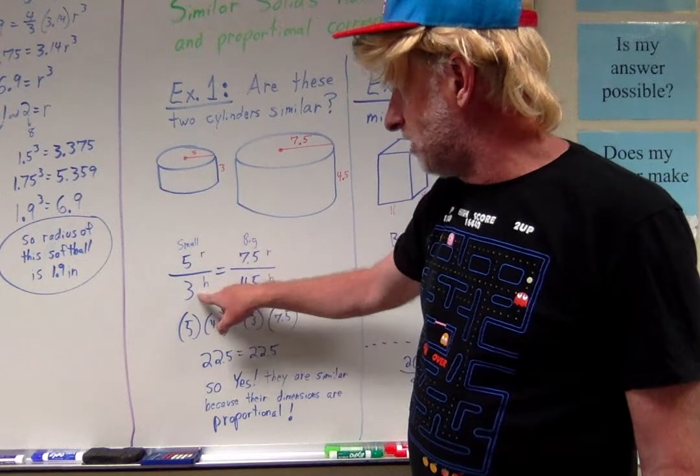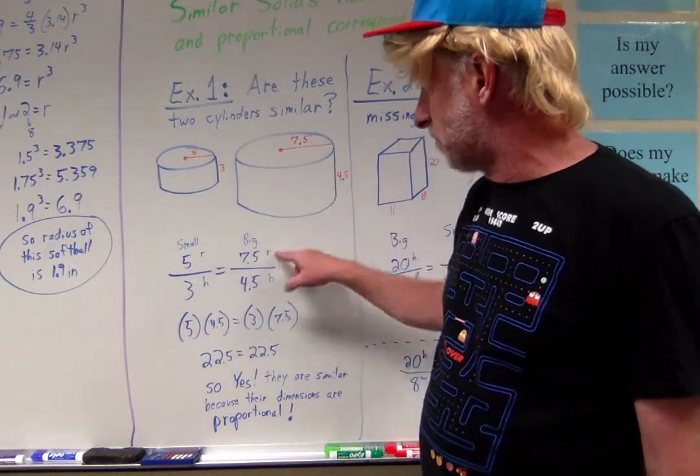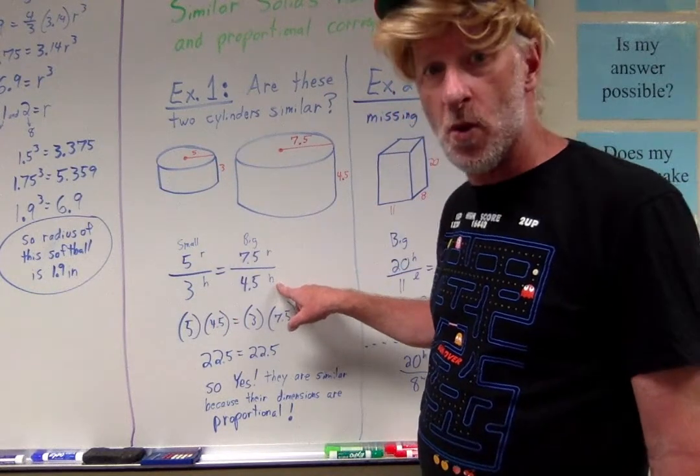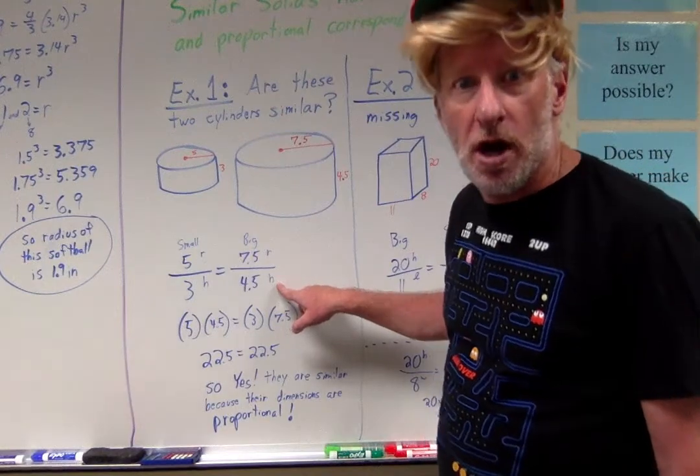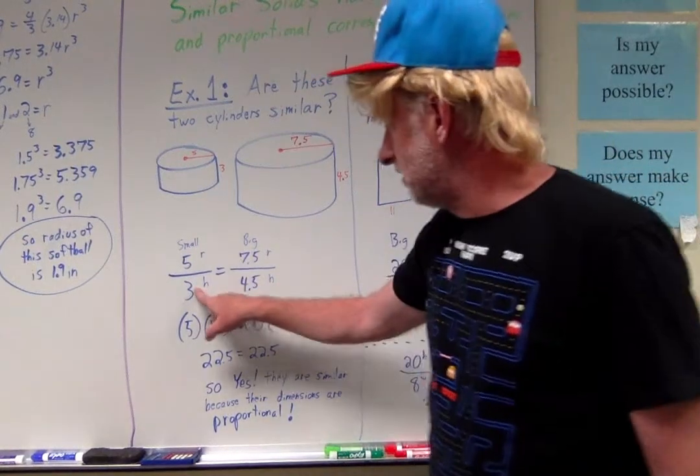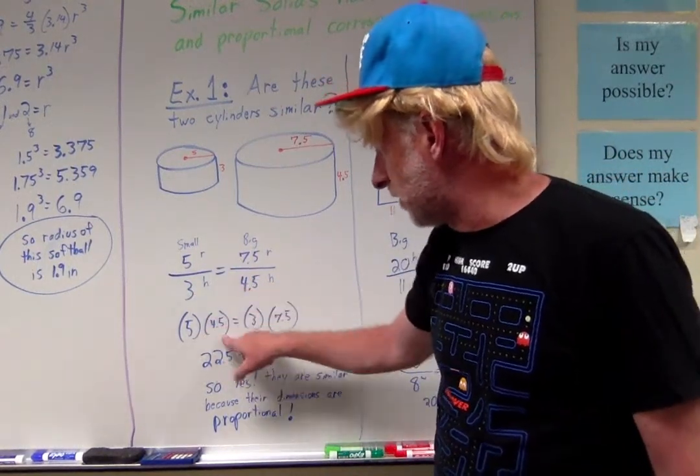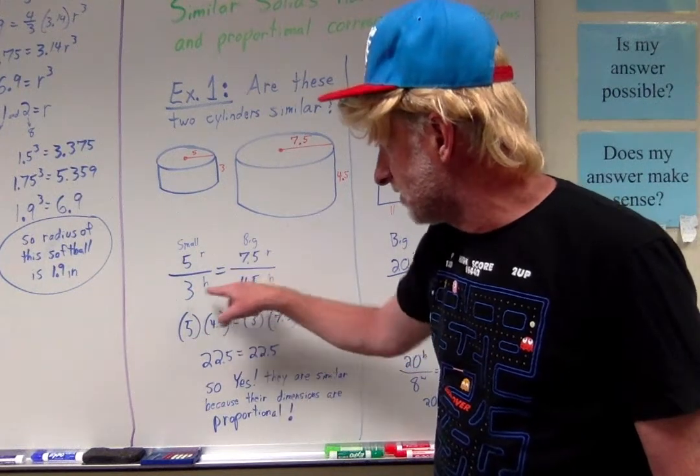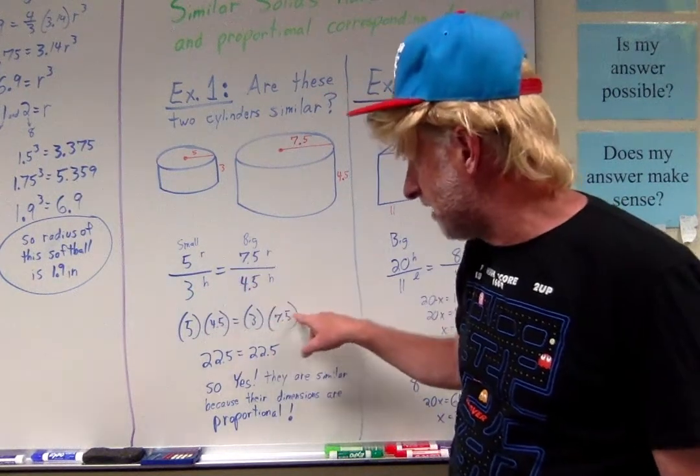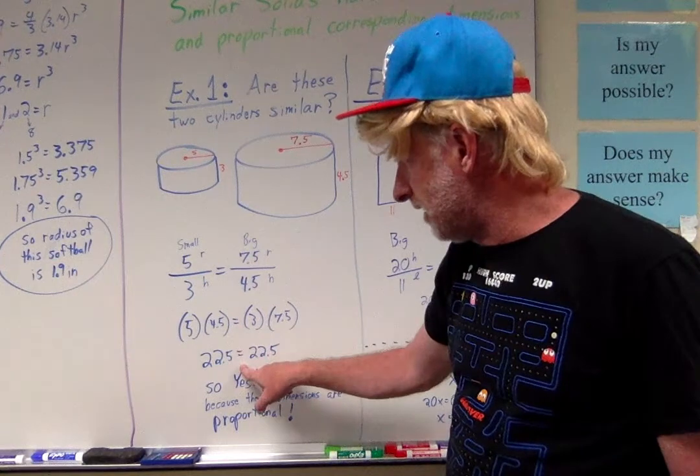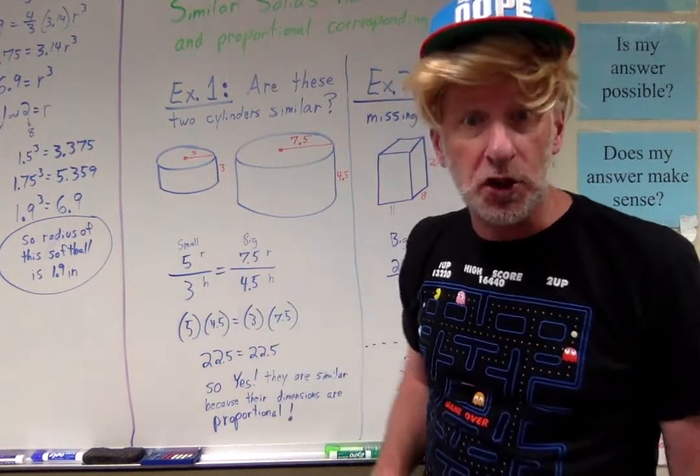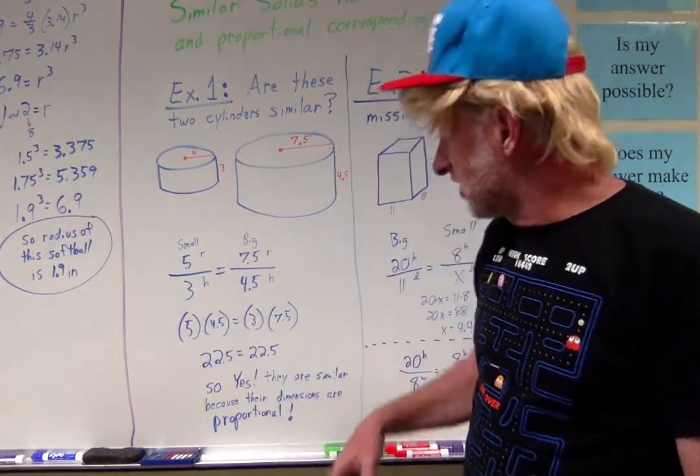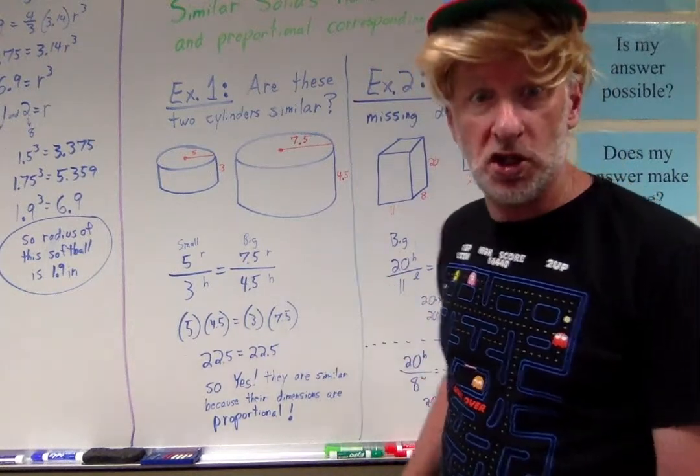The ratio for the small one is the radius compared to the height! So, for the big one, it has to be the radius compared to the height! Is my 5 compared to 3 the same as a 7.5 compared to a 4.5? Well, just to be sure, I cross-multiply! 5 times the 4.5, is that the same as the 3 times the 7.5? Multiply, multiply, 22.5 is equal to 22.5! So, yes, they are similar because their dimensions are proportional!